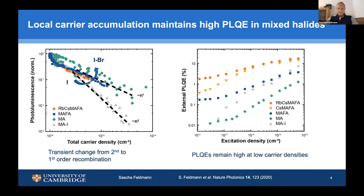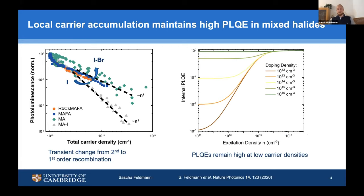We can nicely see that whereas for the gray methylammonium lead iodide prototype the PLQE dies rather quickly if we excite too weakly and get into the non-radiative regime, for all the other compositions we level out at certain PLQE values. This is something that can be very nicely described by using a doping term in modeling these PLQE data, and then we get a higher overall quantum efficiency depending on how the A-site cation engineering is used to optimize non-radiative losses.